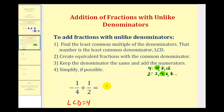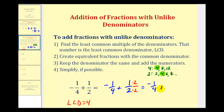The first fraction already has a denominator of four. For the second fraction, since two times two is equal to four, we multiply the denominator by two and the numerator by two — multiplying by two over two is like multiplying by one. Now we have a common denominator of four: negative one-fourth plus two-fourths. The denominator stays the same, and since negative one plus two is positive one, our sum is one-fourth.